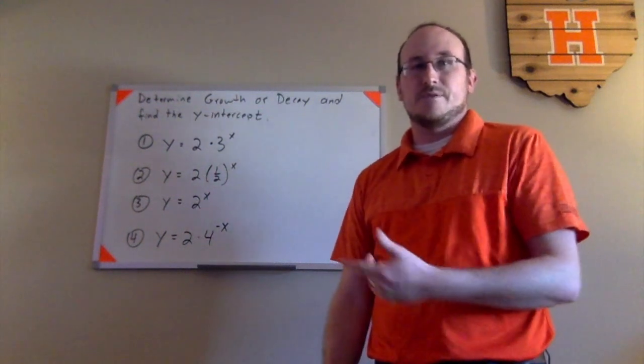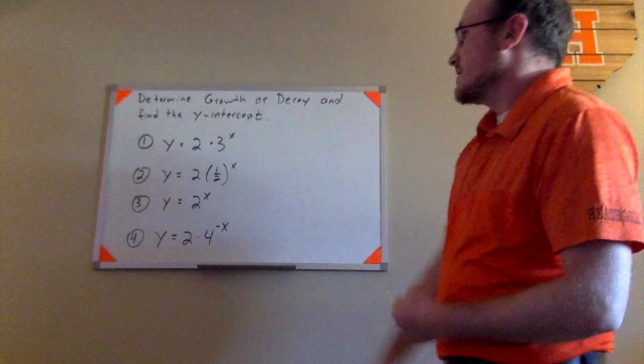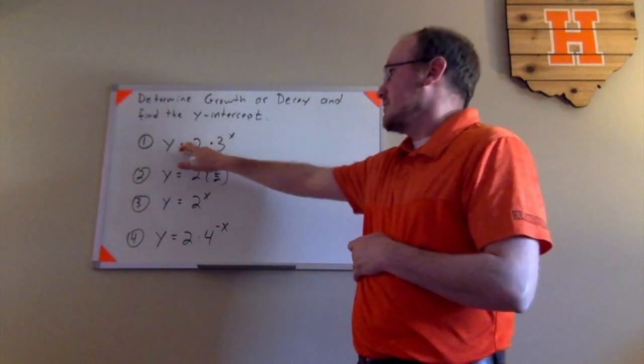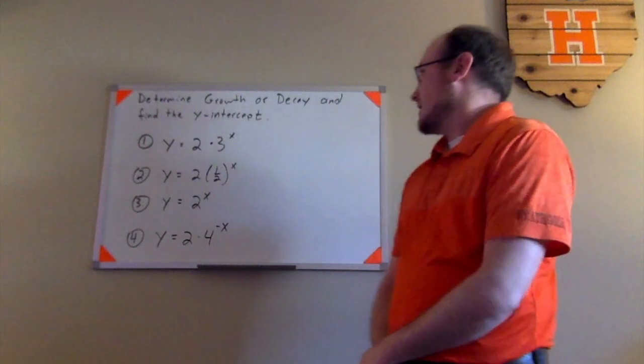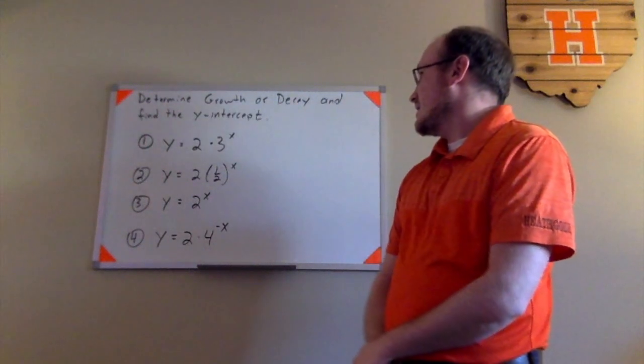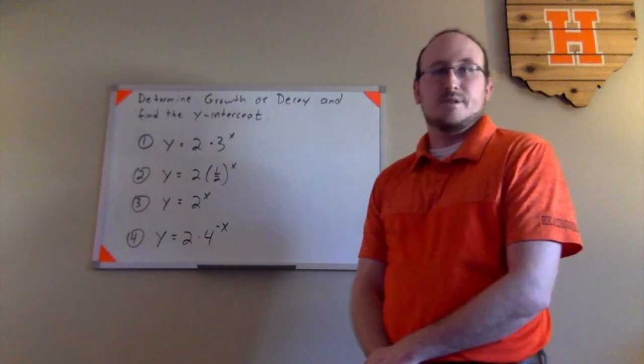So the initial value, that value of a, is the y-intercept for the graph. So if we look at this first one, y equals 2 times 3 to the x, give me a second to think what might be the y-intercept and whether that represents growth or decay.